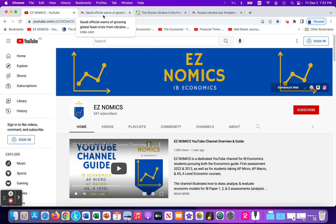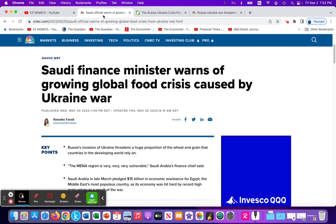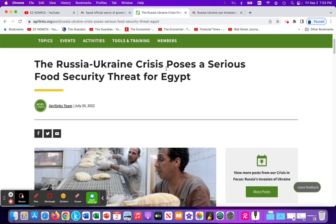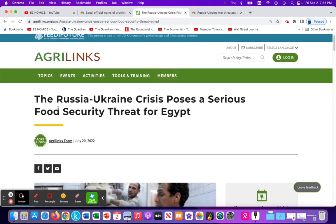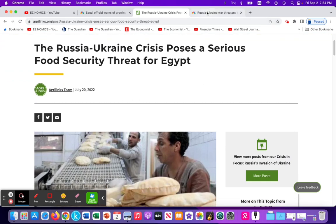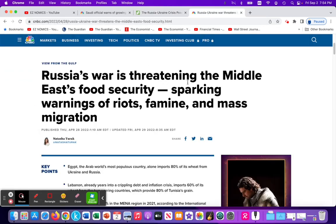I wrote Paper 2 at the end of the last academic year using the following articles, which I will post into the information section of this video below, with links to this article from CNBC: Saudi Finance Minister Warns of Growing Global Food Crisis Caused by the Ukraine War. Another article looking at the impact of the Russian-Ukrainian crisis on food security to Egypt. And another article, again from CNBC, Russia's War Threatening the Middle East's Food Security, Sparking Warnings of Riots, Famine, and Mass Migration.